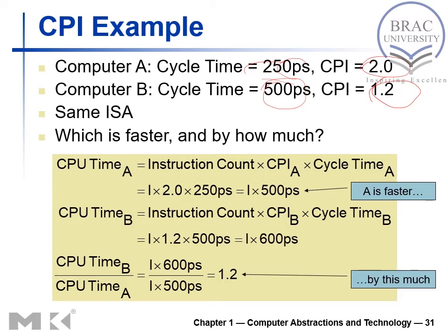Our job is to figure out which computer is faster and by how much. We know CPU time equals instruction count times CPI times clock cycle time. For computer A, since the instruction count is not given, let's call it I. CPU time for A equals I × 2 × 250 picoseconds, which gives I × 500 picoseconds.